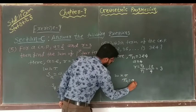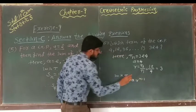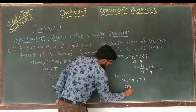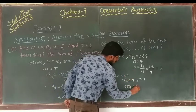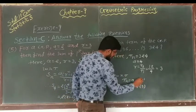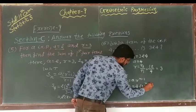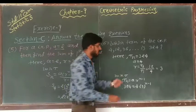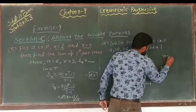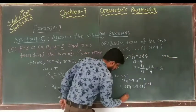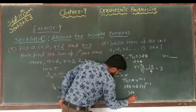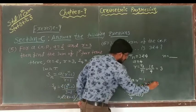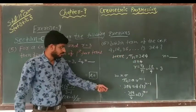We know that TN equals A into R raised to (N minus 1). So TN equals 324 equals 4 into 3 raised to (N minus 1). Therefore 324 divided by 4 equals 3 raised to (N minus 1). Now we divide.